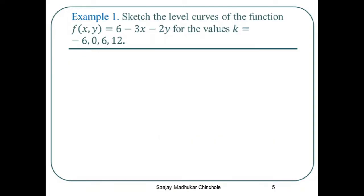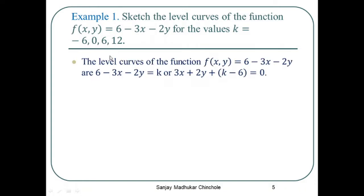Example 1: Sketch the level curves of the function f(x, y) = 6 − 3x − 2y for the values k = −6, 0, 6, and 12. What we have to do is take f(x, y) = k as the level curve of f(x, y) at the value of k.